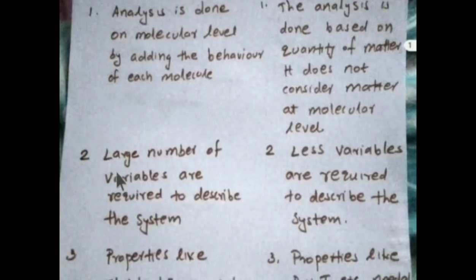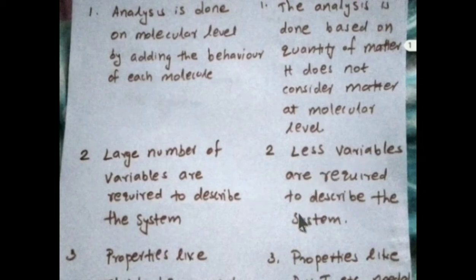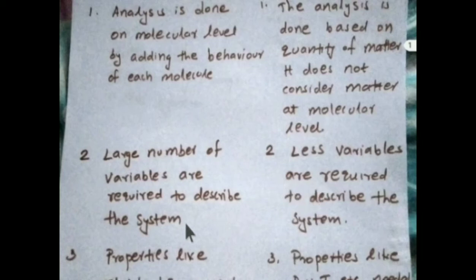The next difference is in the number of variables required. In the statistical approach, a large number of variables are required to describe the system, making it a complex method. In the classical approach, fewer variables are required to describe the system, making it a simpler method.